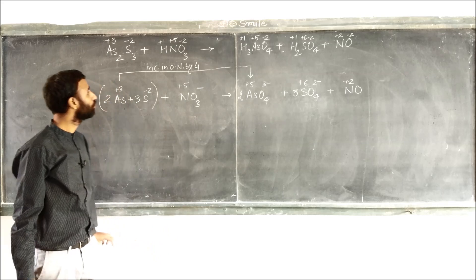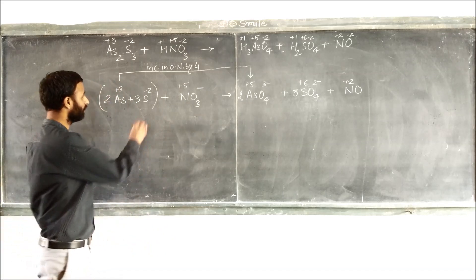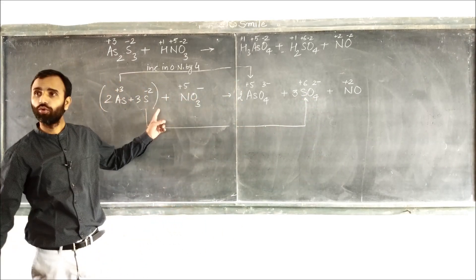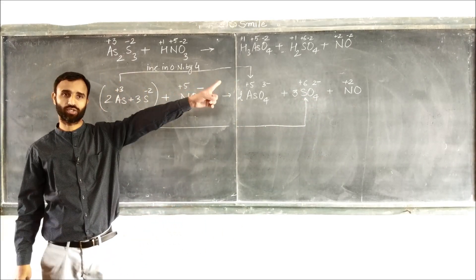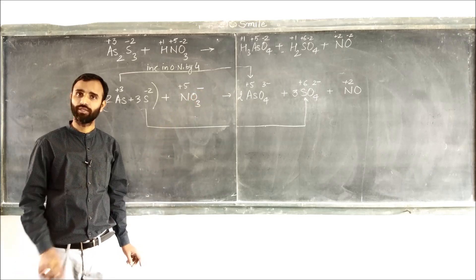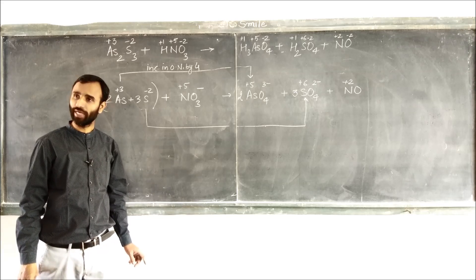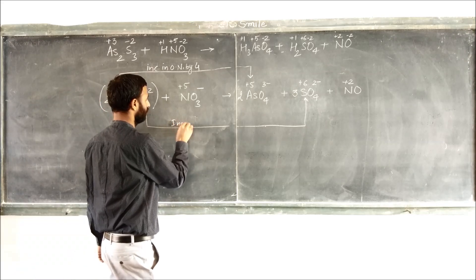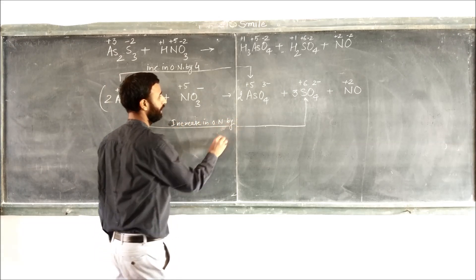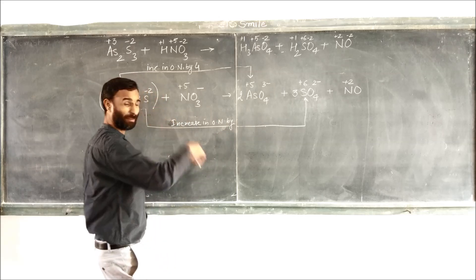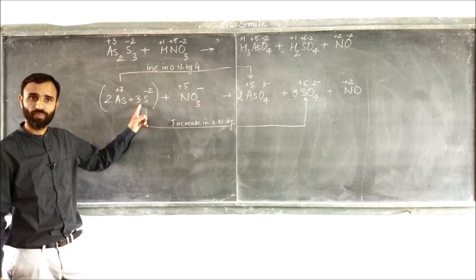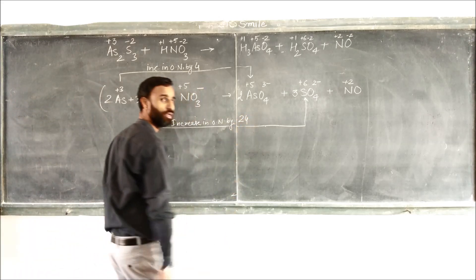What about sulfur? Minus 2 to plus 6, increase in oxidation number per sulfur is 8. How many sulfur are there? 3. So total 24.